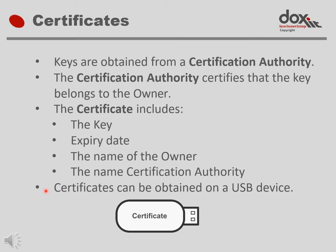When the owner wants to encrypt a document, or electronically sign a document, as we will see in Part 4, the owner inserts the USB device into one of the USB slots of their computer. With the right software on the computer, a document can be encrypted or signed by using the encryption key that is stored on the USB device.